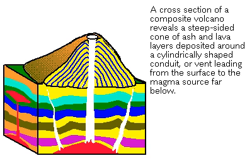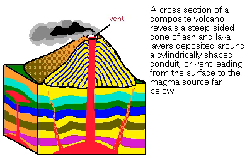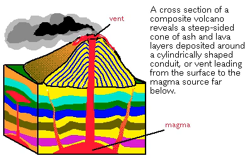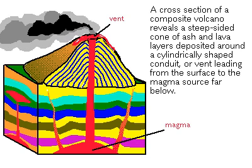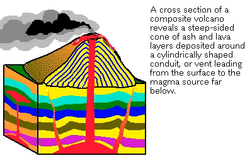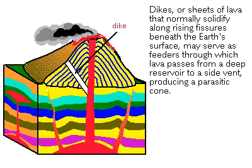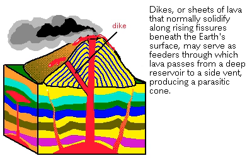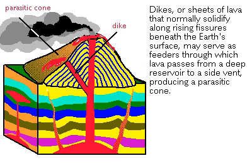A volcano may have more than one vent. During an eruption, dikes or sheets of lava that normally solidify along fissures beneath the earth's surface may serve as feeders for lava passing to a side vent, producing a parasitic cone.